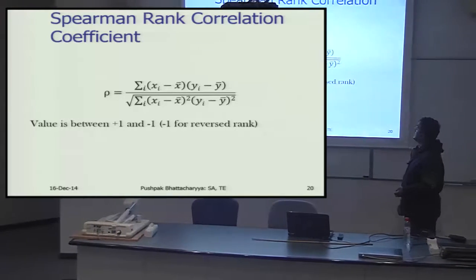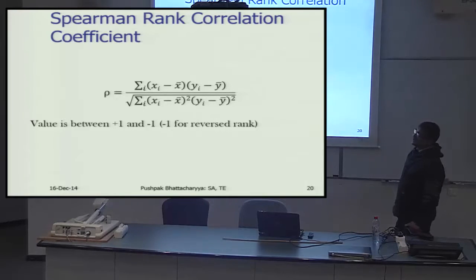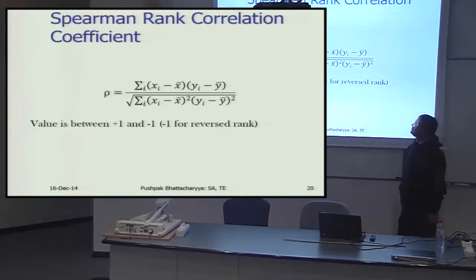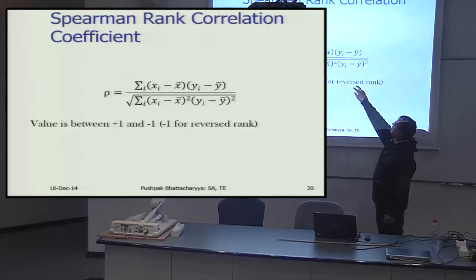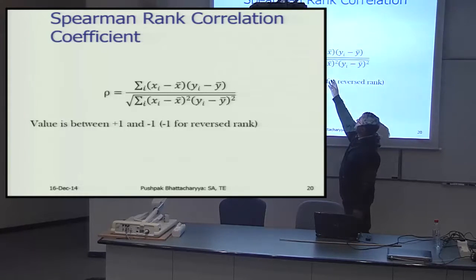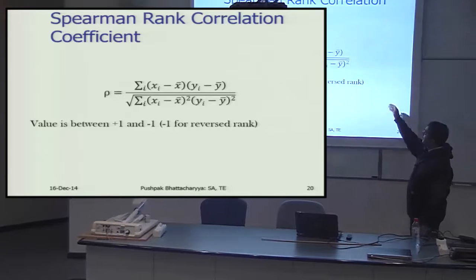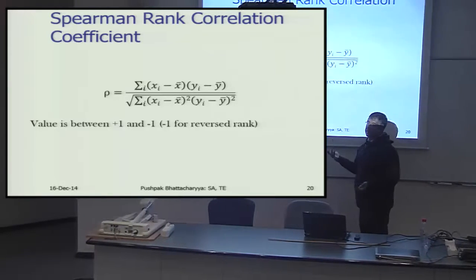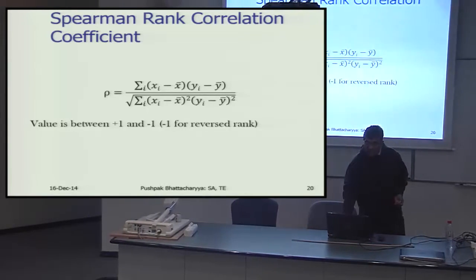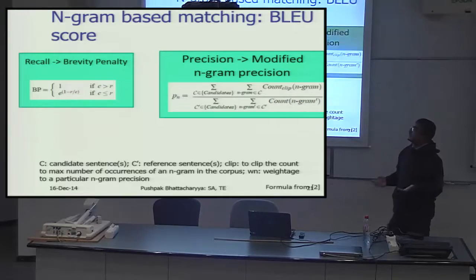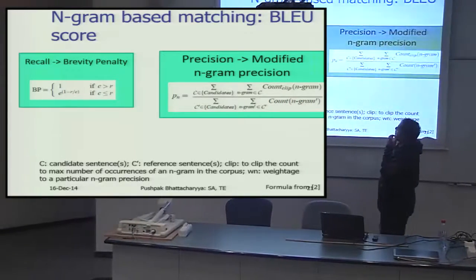The second rank-based measure is Spearman rank correlation coefficient, which is also available as an automatic formula in Microsoft Excel. The correlation is measured by the distance from mean of the two random variables — take their product, sum them for all observations, and divide by the product of standard deviations of the two random variables. A positive correlation shows the two sentences are similar; negative correlation shows otherwise. All these methods — dice, Jacquard, Kendall's tau, Spearman — are at the level of words.